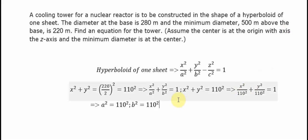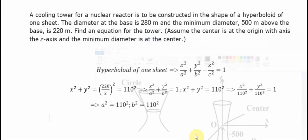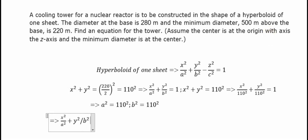For the next step: the minimum diameter 500 meters above the base is 220 meters. The diameter at the base is 280 meters. From the base up to the center is 500 meters, but since we use the center as the origin, the base is at z equals minus 500. We substitute into the hyperboloid equation: x²/a² plus y²/b² minus z²/c² equals 1, with a² = b² = 110² and z = minus 500.